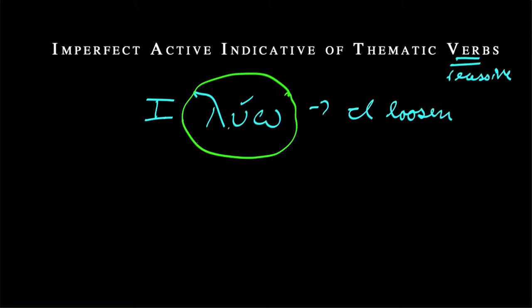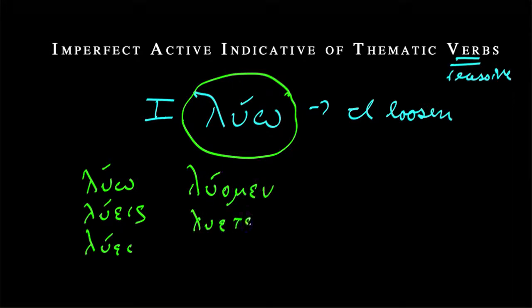We're going to be focusing in and working with this first principal part, λύω. Well, we already know how to do this in the present. This is where we have λύω, λύεις, you dissolve, you loosen. λύει, getting ahead of myself. λύει, he, she, it is loosening. λύομεν, λύετε, y'all are loosening, and then λύουσι with that movable nu.